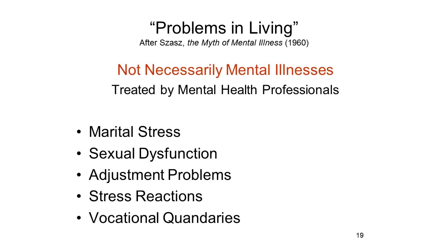In addition to these widely recognized forms of mental illness, there are also more mundane problems in living—a term coined by Thomas Szasz, a psychiatrist who's actually a famous critic of psychiatry, in a book he wrote in the early 1960s called The Myth of Mental Illness. Szasz famously argued that syndromes like schizophrenia and affective disorder are not mental illnesses at all, but simply problems in living. We don't have to go that far, though, to recognize that people in ordinary life sometimes have difficulties that lead them to seek counseling from a mental health professional, even though they're not mentally ill.